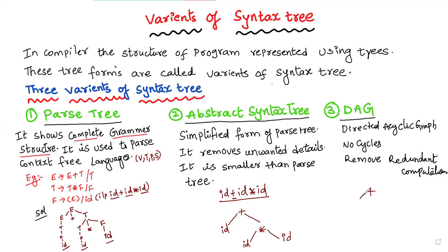In the DAG, for an expression like id + id * id, we write plus with id, then a star operator. Since id already exists, rather than repeating, we share the id node — so id * id * id is represented with shared id nodes. This removes redundant computation. This is called DAG — directed acyclic graph. These three are called the variants of syntax tree. Thank you for watching this video, please subscribe to my channel.